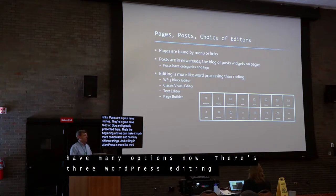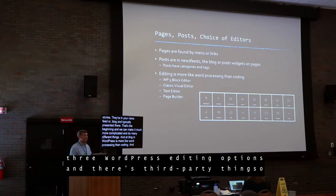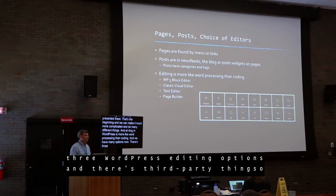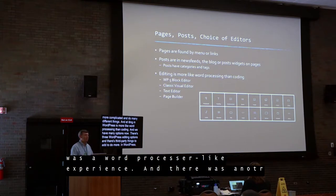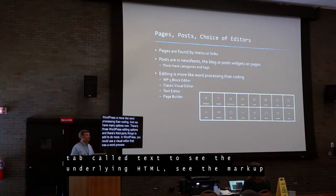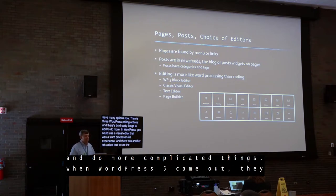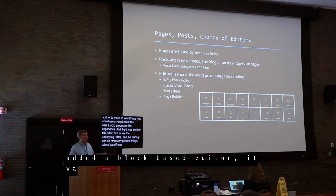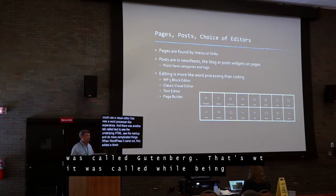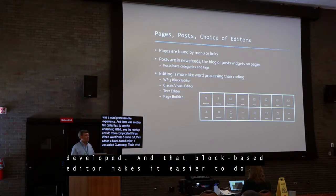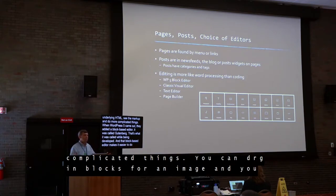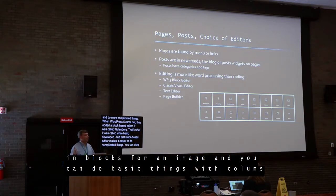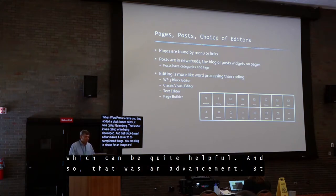There are three WordPress editing options, plus third-party tools you can add in to do even more. WordPress always had a visual editor — a very word-processor-like experience — and another tab showing the underlying HTML. When WordPress 5 came out, they added a block-based editor, often called Gutenberg. That editor makes it easier to do more complicated things because you can drag in blocks for a heading, paragraph, image, or some basic column layouts. That was an advancement.